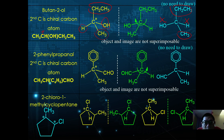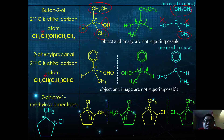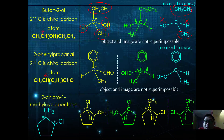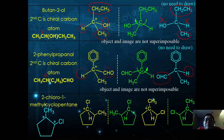Another example is 2-phenylpropanol, where the second carbon acts as a chiral carbon atom. When drawn in tetrahedral form and reflected, then rotated 180 degrees, the object and image are not completely superimposable. Therefore it exhibits optical isomerism.